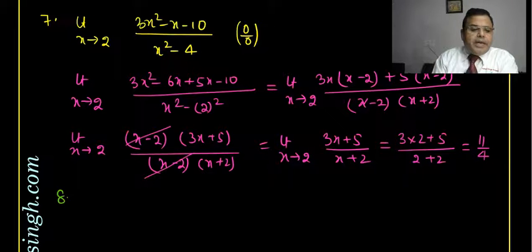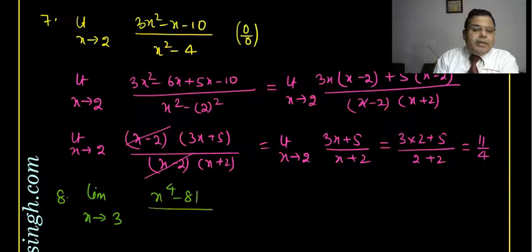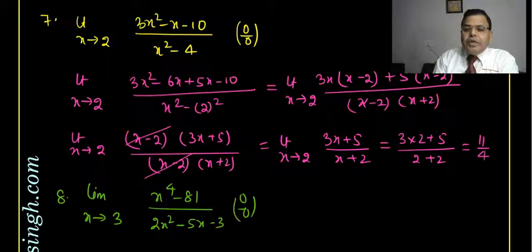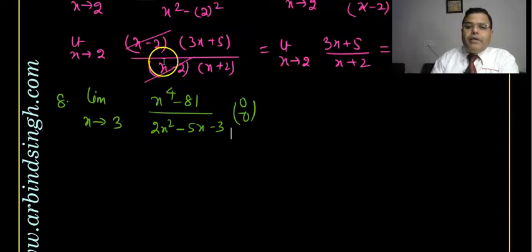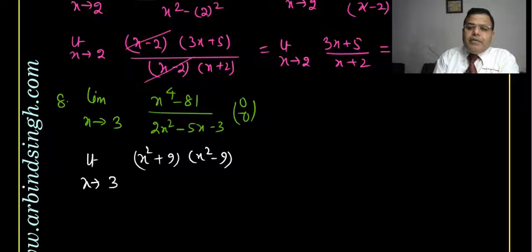Question 8: limit as x tends to 3 of (x⁴ − 81) divided by (2x² − 5x − 3). If I put x = 3 it is also in the form 0/0, so we factorize. The numerator x⁴ − 81 can be written as (x² + 9)(x² − 9) because 81 = 9², and x² − 9 factors further as (x + 3)(x − 3).